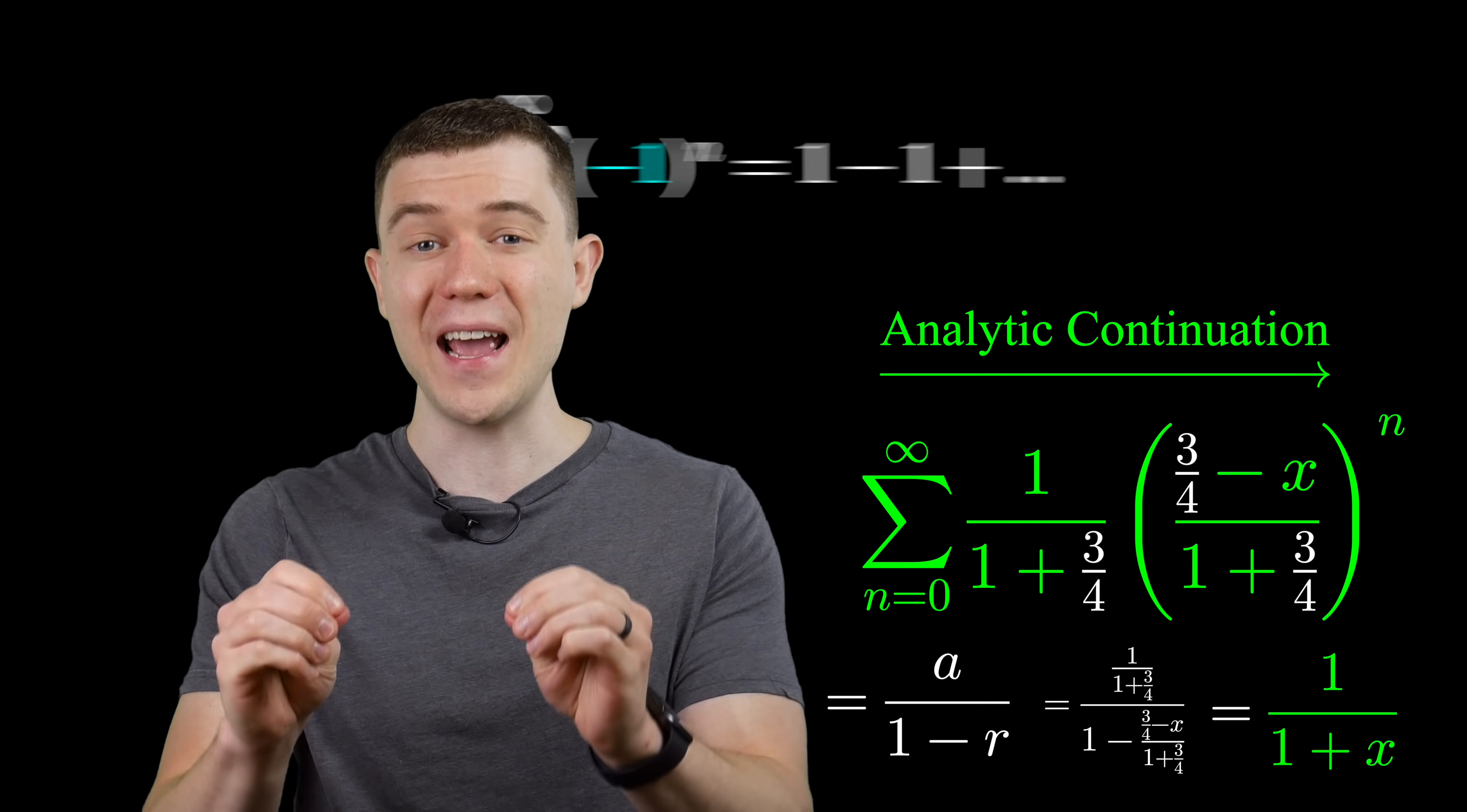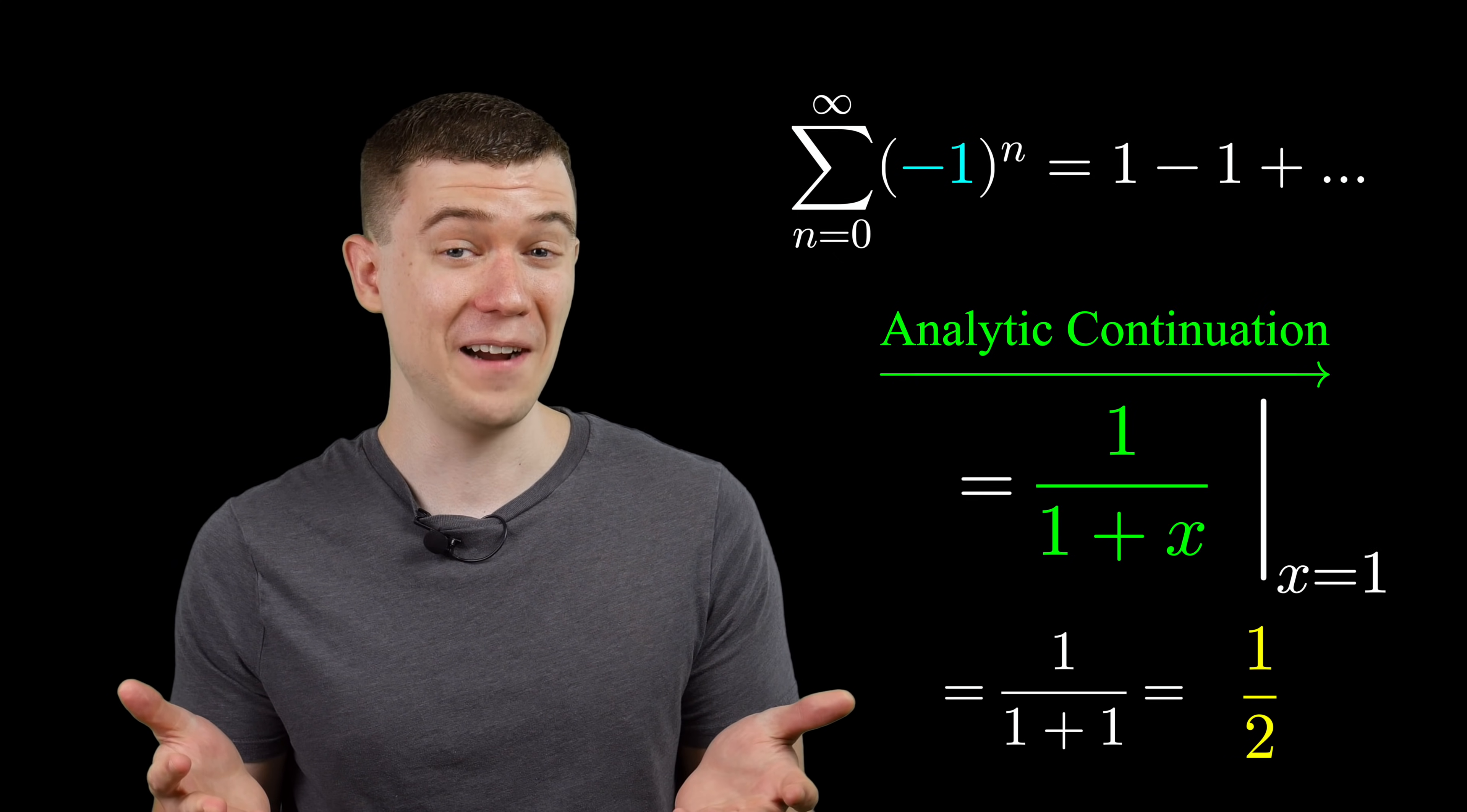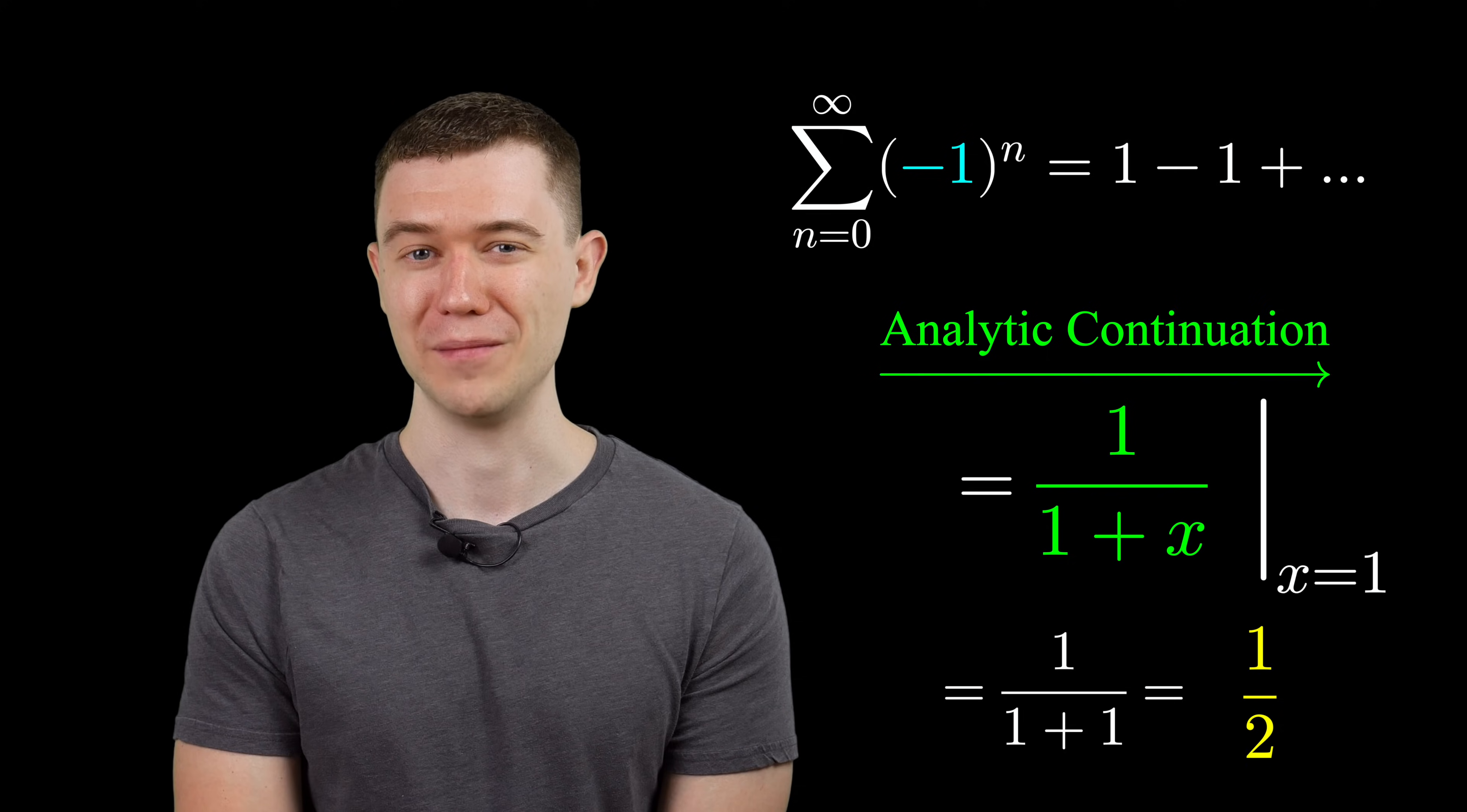So if we substitute in x equals one via an analytic continuation, this equals our Grandi series. And its sum converges to one over one plus one or one half. I'm still not entirely sure that I'm convinced, but this argument is pretty compelling. If you want absolutely no dispute over an amazing convergent sum, click the video on the screen right here. I'll sum you in that one.